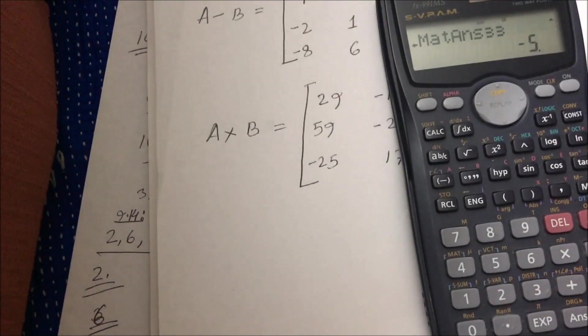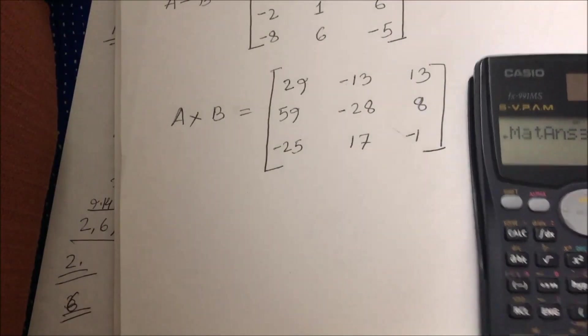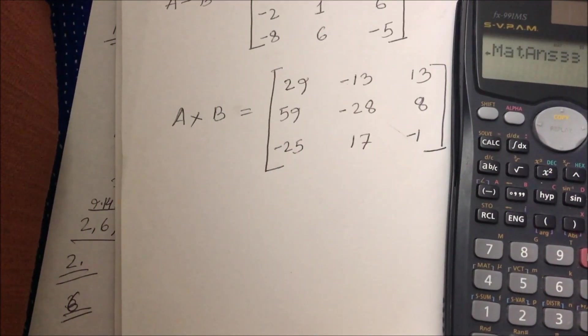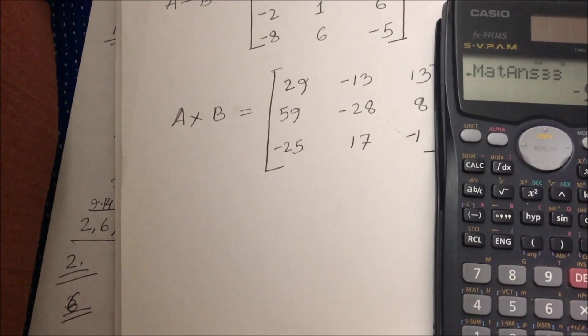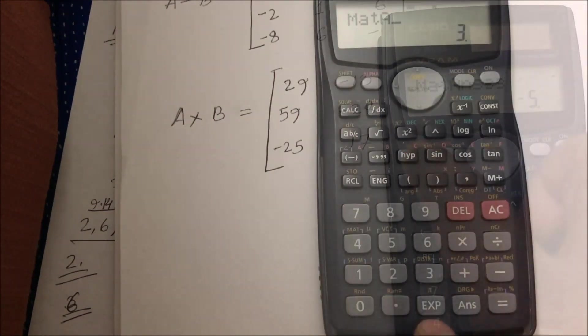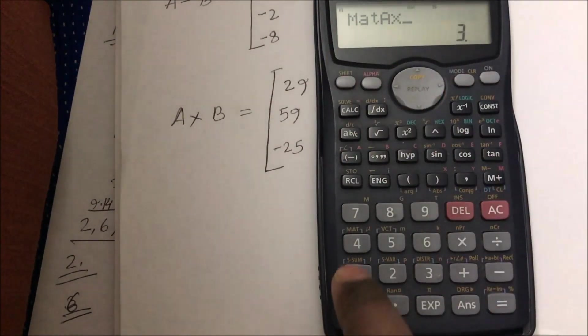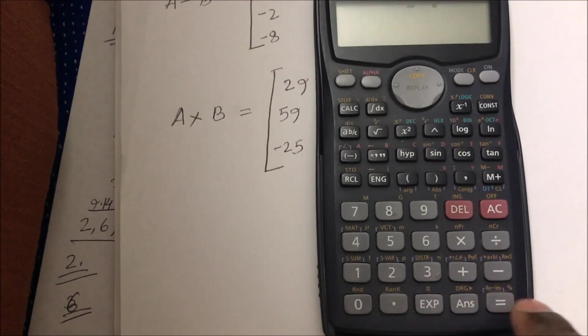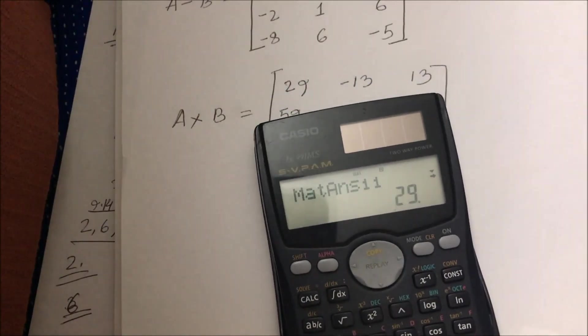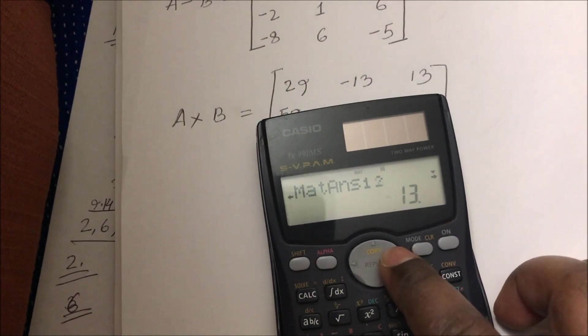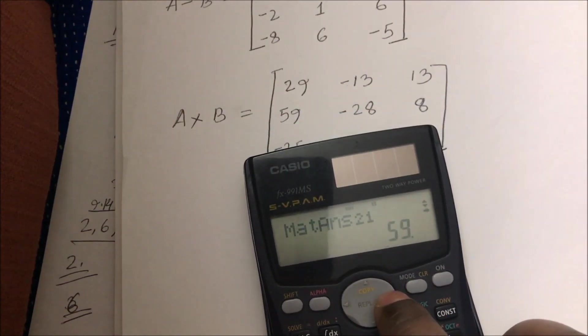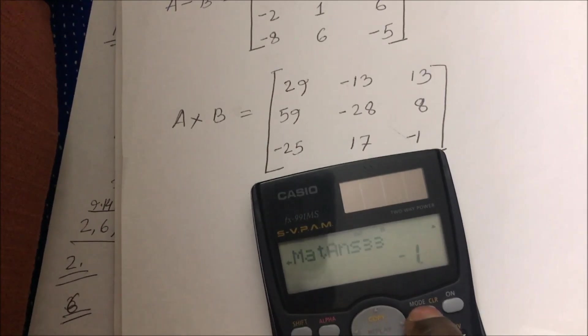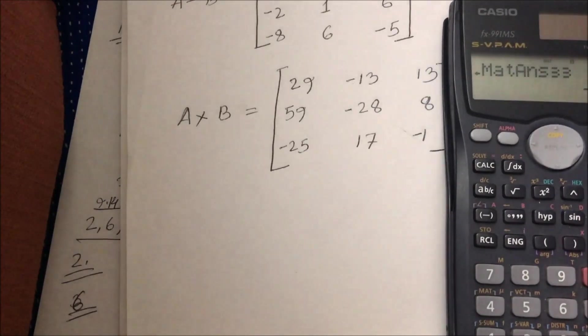So now this is the multiplication. If you want to just do the multiplication, you have to go through this process: put the matrix and put the element, everything. Now you have to do similarly multiplication as you did for addition and subtraction. Multiply it: shift, mat, 3, 1, times, shift, mat, 3, 2. Here you go. So here again you see this multiplication. I can go ahead and check number by number: 29, -13, 13, 59, -28, 8, -25, 17, -1. Looks good.